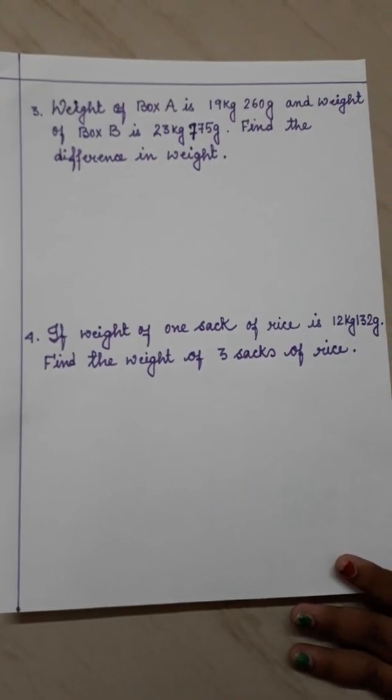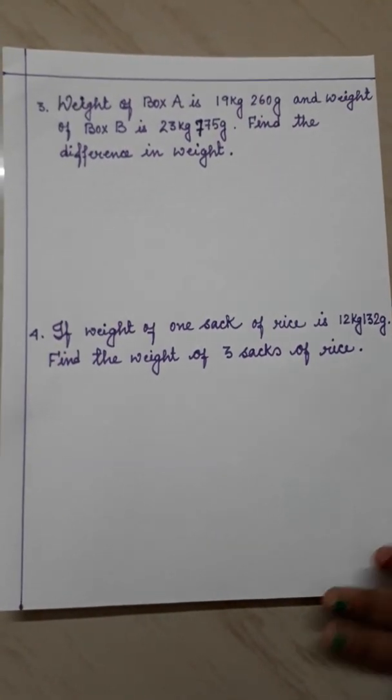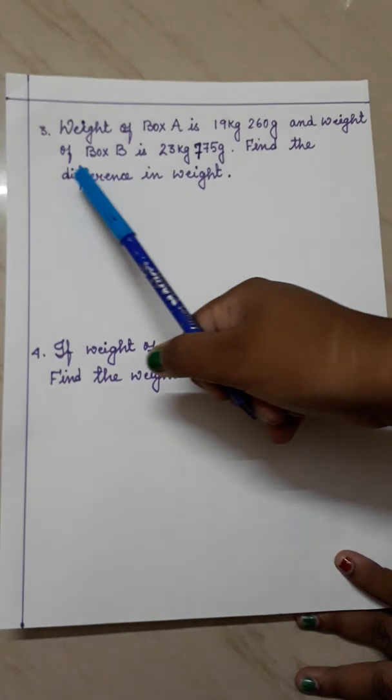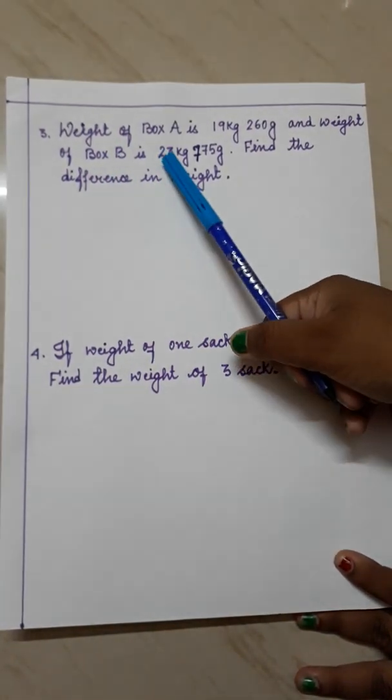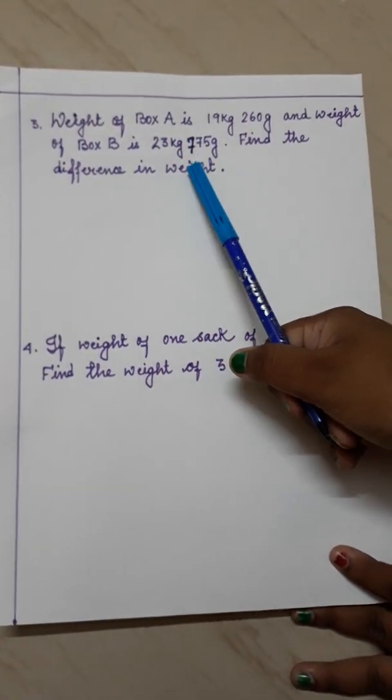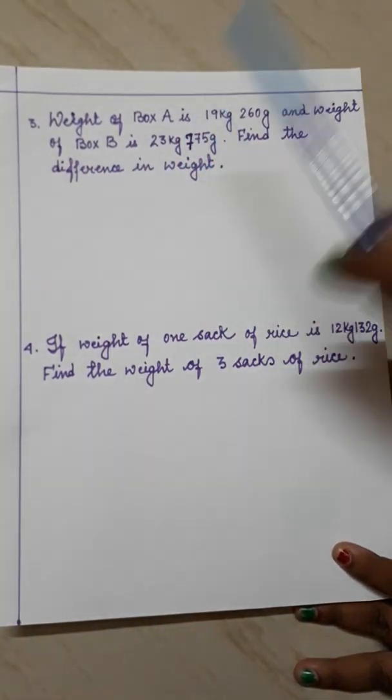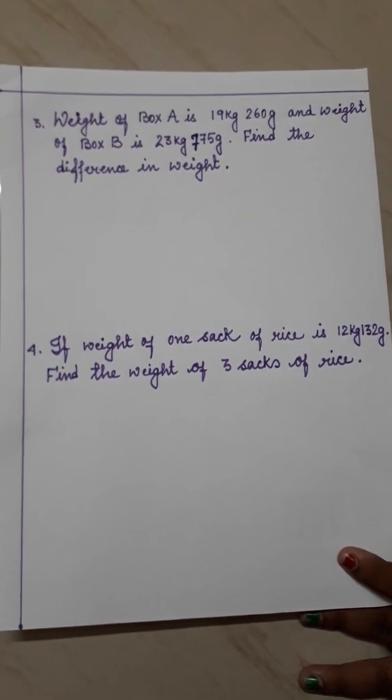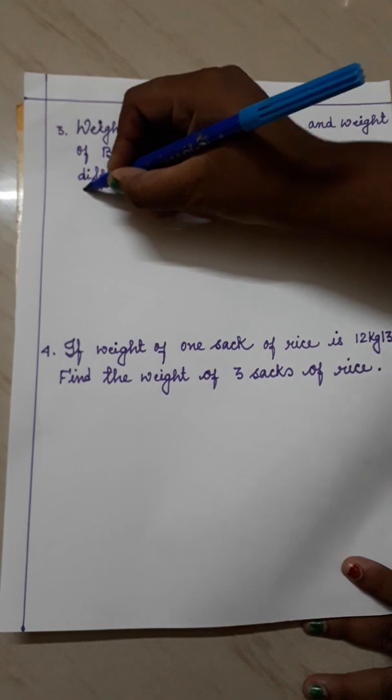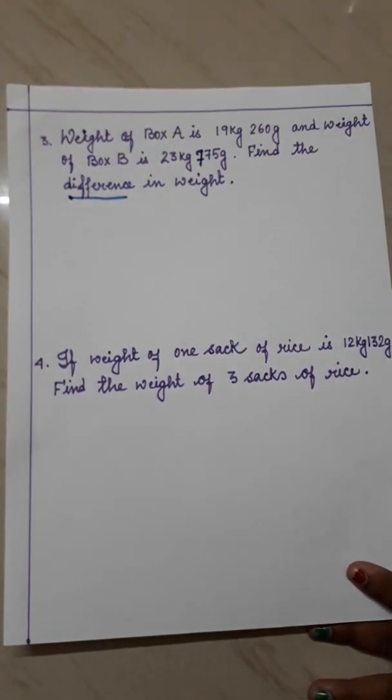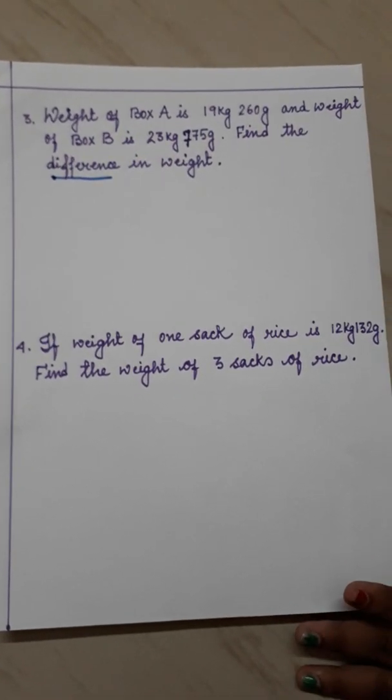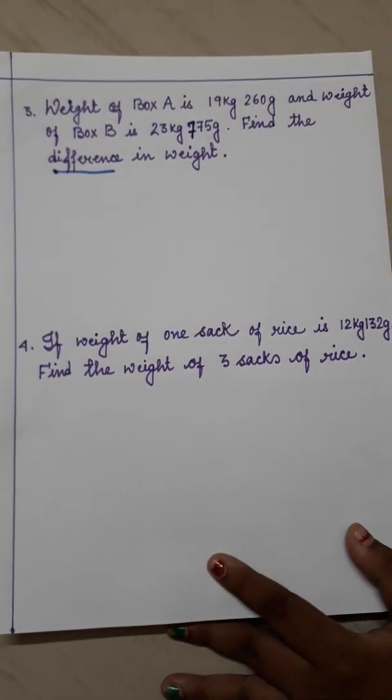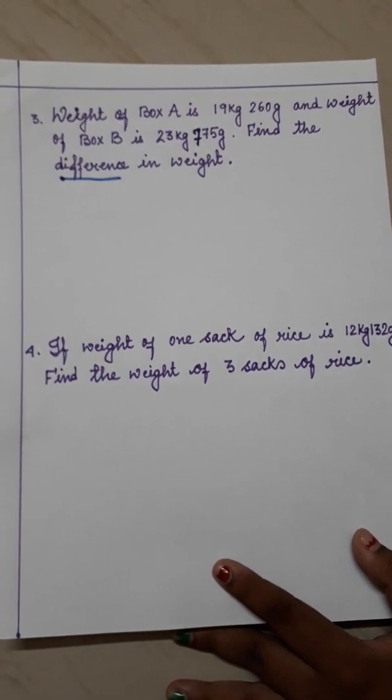Now question number 3. Weight of box A is 19 kg 260 gram and weight of box B is 23 kg 775 gram. Find the difference in weight. From the question you can easily understand what we have to do. Whenever there is difference, then of course we have to do subtraction. So here as we have to do subtraction, we have to write the bigger one at first and then the smaller one.